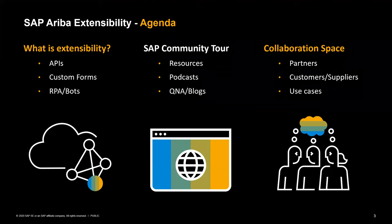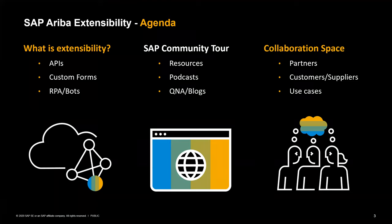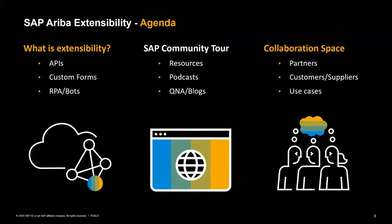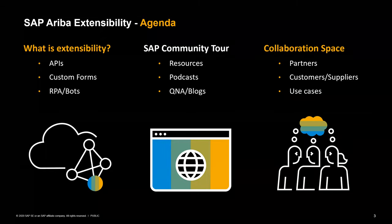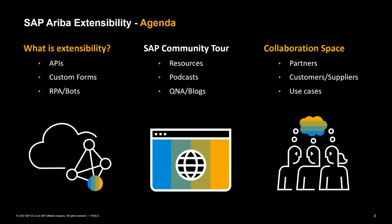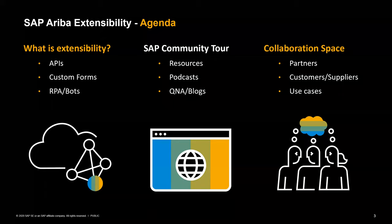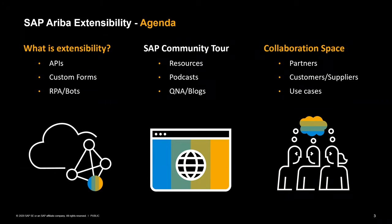You can see a little bit of our agenda today. First, we'll cover what extensibility is — within SAP Ariba that comprises a number of things, but today we'll mainly focus on APIs, custom forms, and RPA or robotic process automation and bots. Next, we'll go through a quick tour of the SAP community page, including available resources, a podcast series, the blog and Q&A section, and the collaboration space.